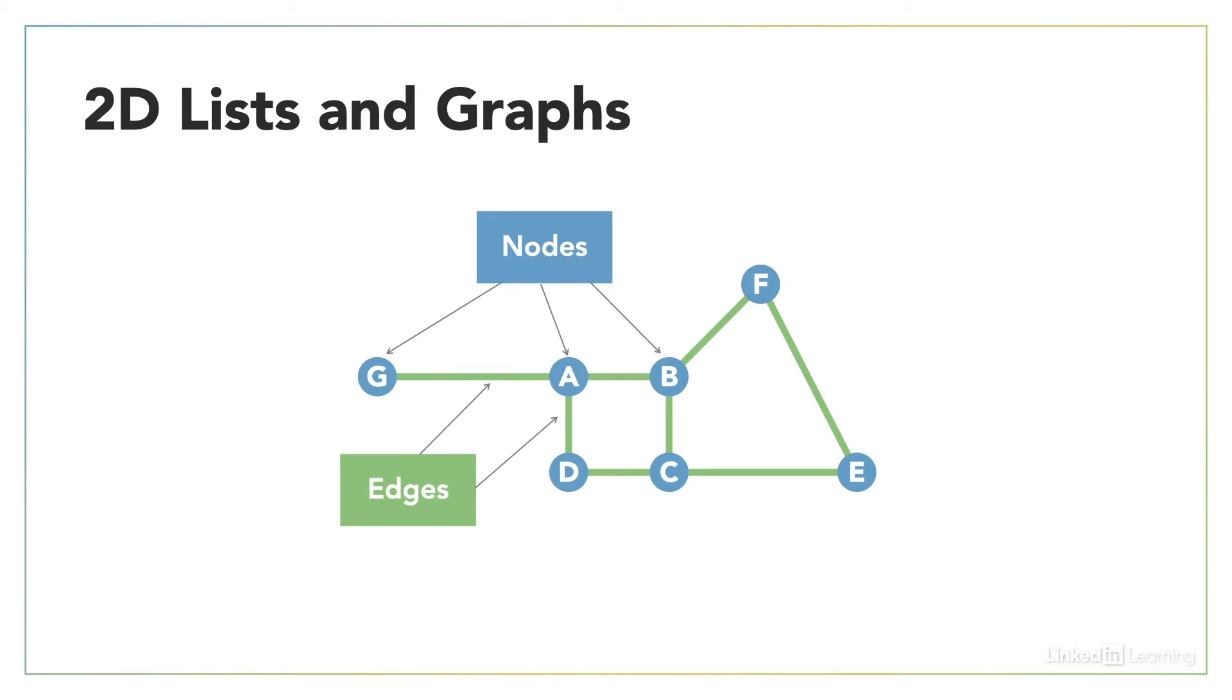So this is a very quick crash course in graphs, if you haven't come across them before. So basically we have nodes and edges, and in this image on the slide you can see we're using letters to represent the nodes, and they're connected by edges, which are the green lines.